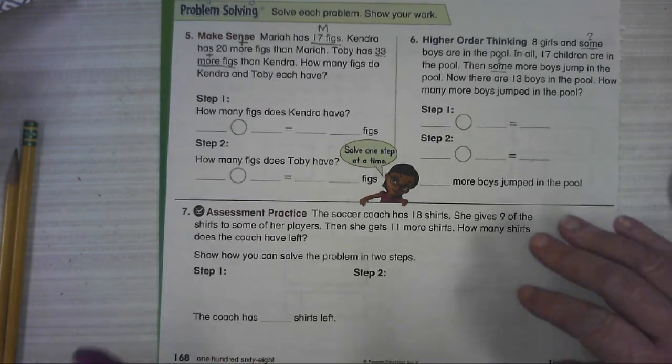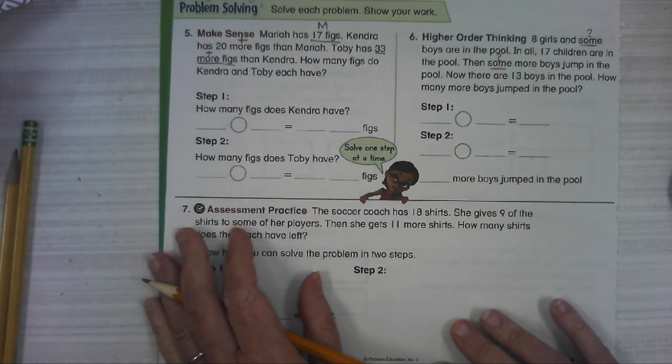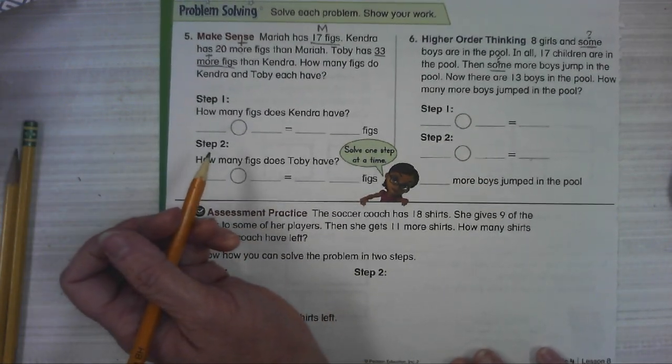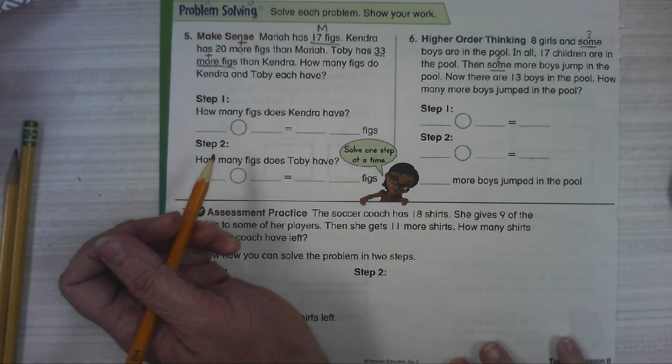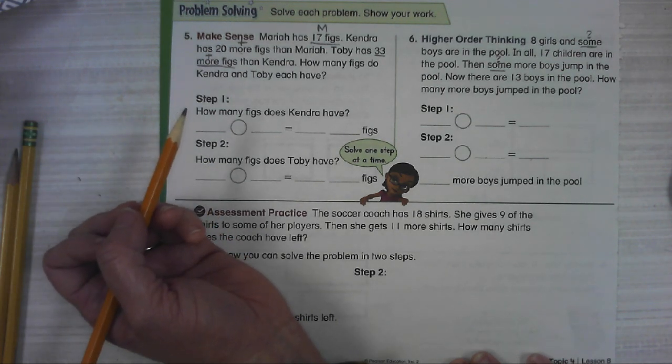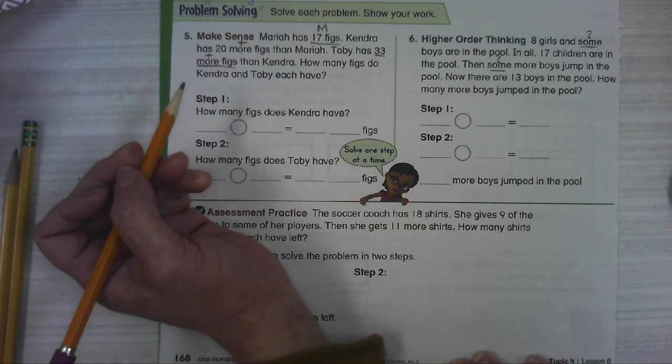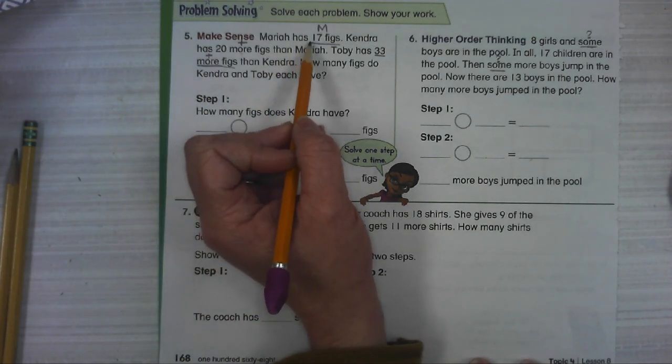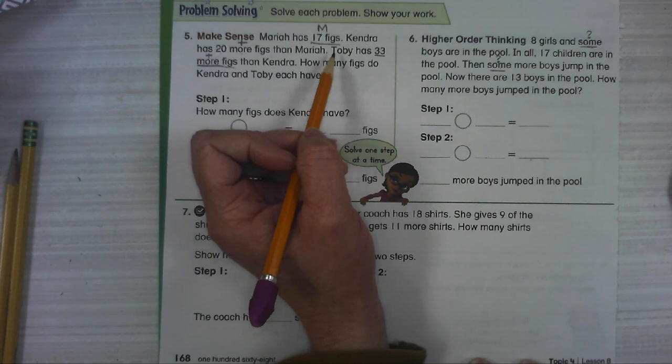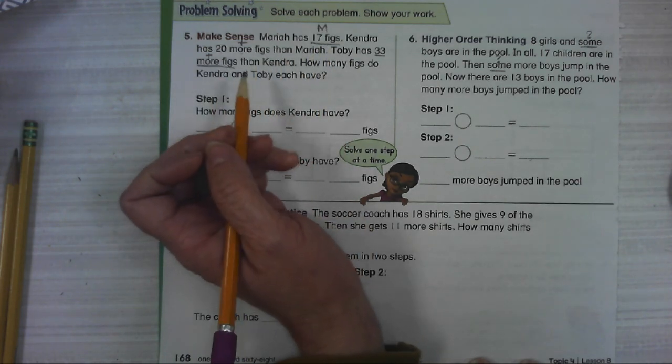Let's work through the ones on the back. Let's deal with all these figs. Do you like figs? I wonder if you've ever had them. They're very, I've only had them in a jar and they're very sweet. Mariah has 17 figs. Well, that's easy. We know, so we know Mariah.